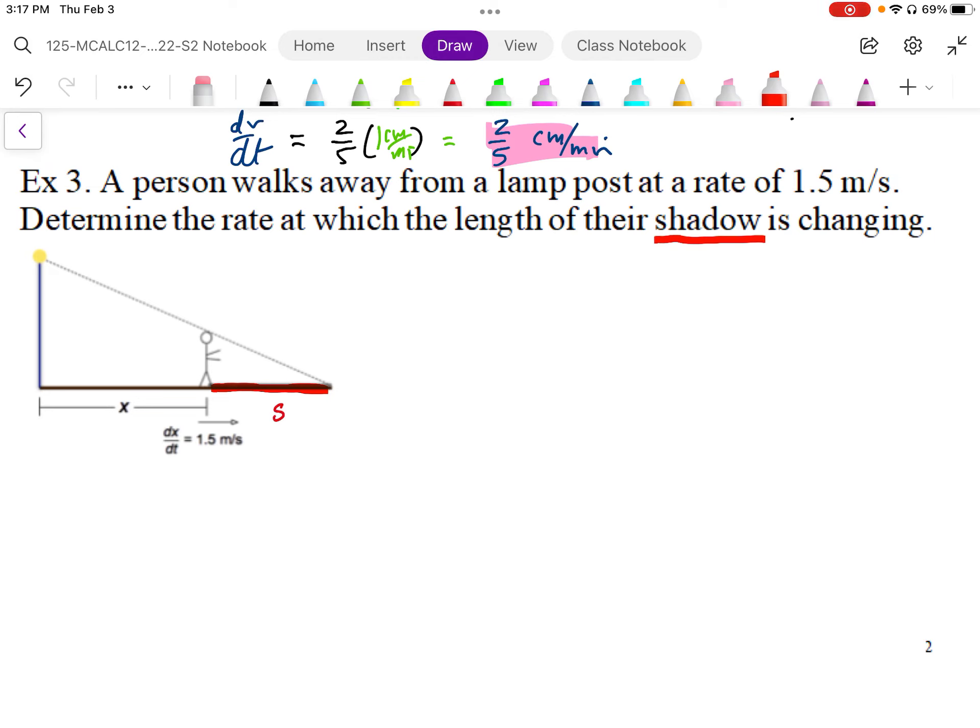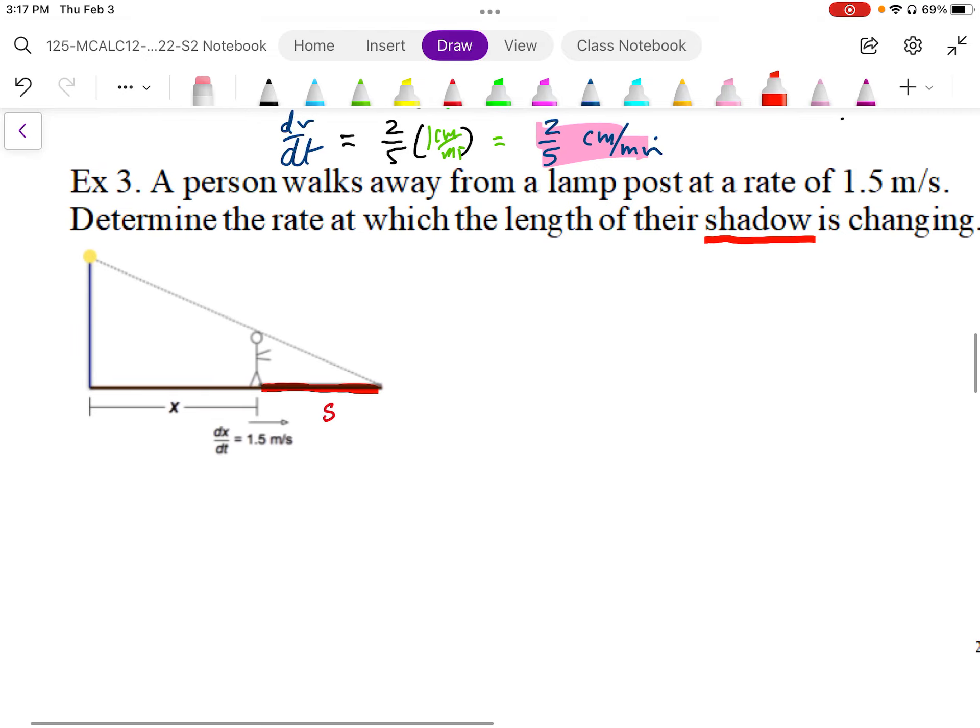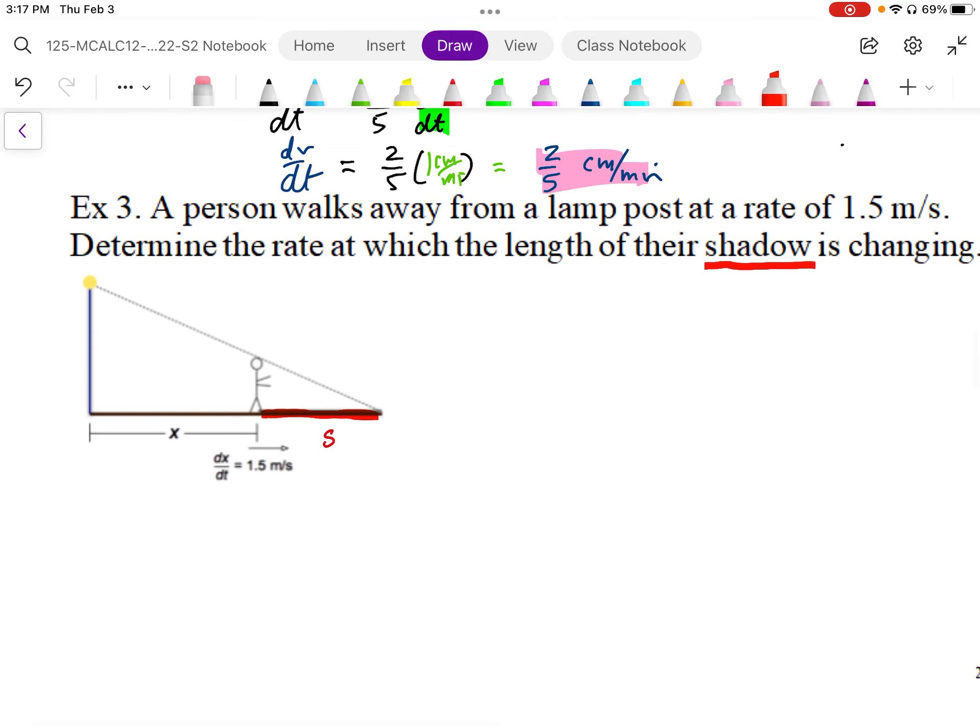So basically we have the height of the lamp. So I should actually put a height in here. So let's say that this is 15 feet. And we'll say that the distance x, we'll find the distance, the rate when x is equal to, let's say that's 10 feet. Okay, so the position is at 10 feet.